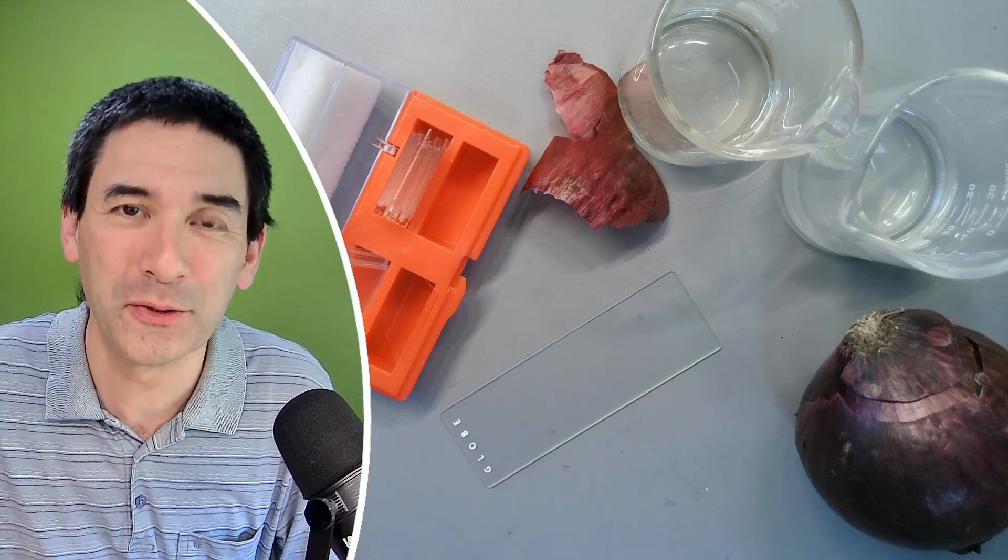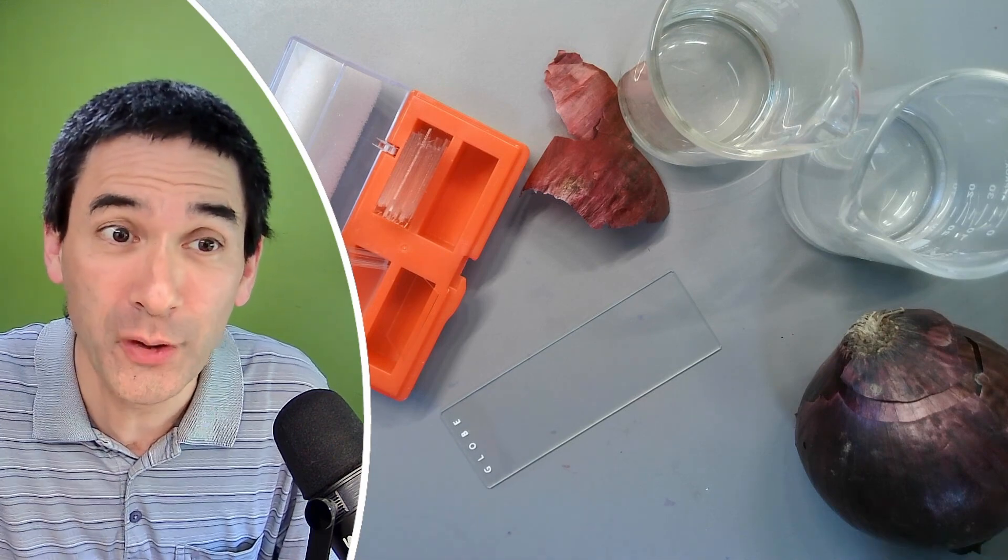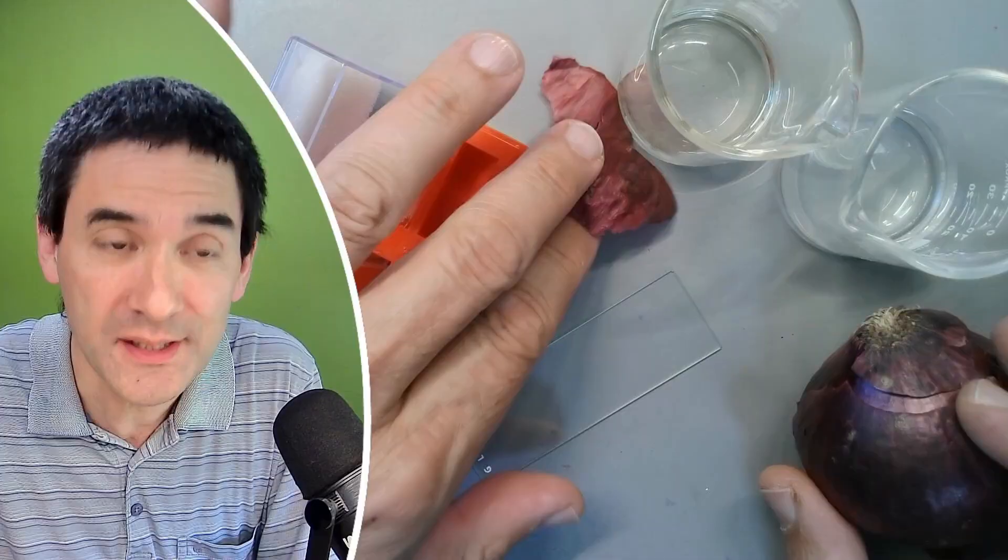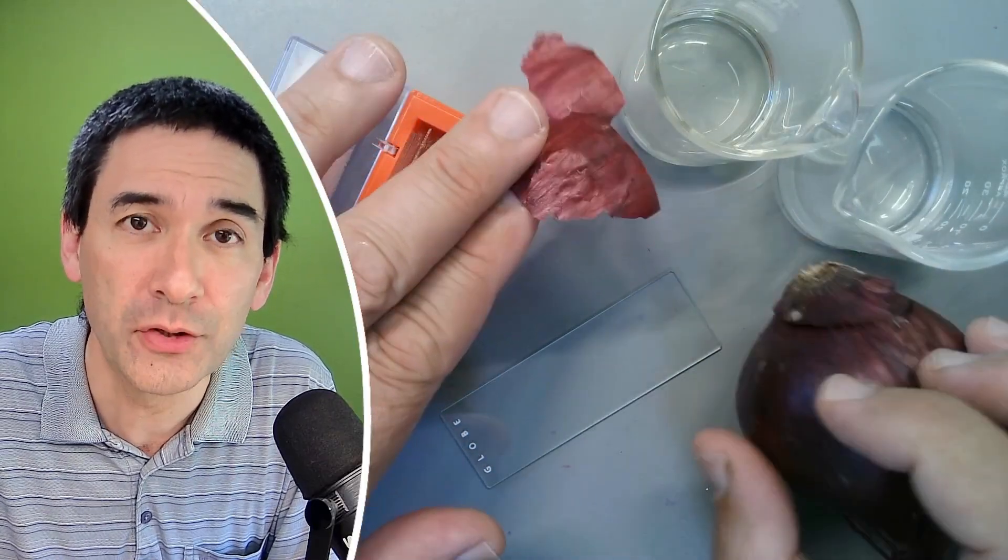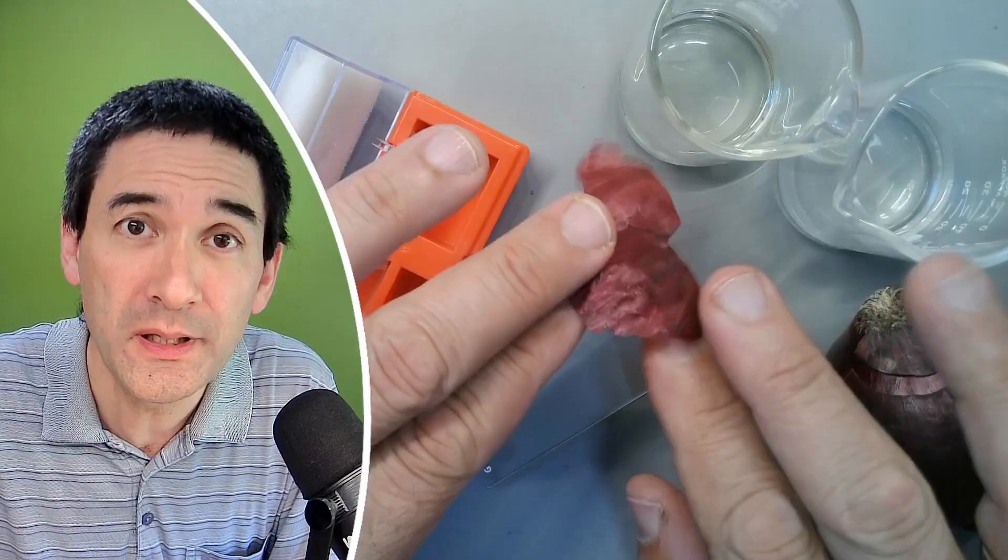So hi, hello and welcome again. Microbe Hunter here. Today I'll be showing you how you can prepare some onion skin, specifically this dry outermost layer here, for microscopy.